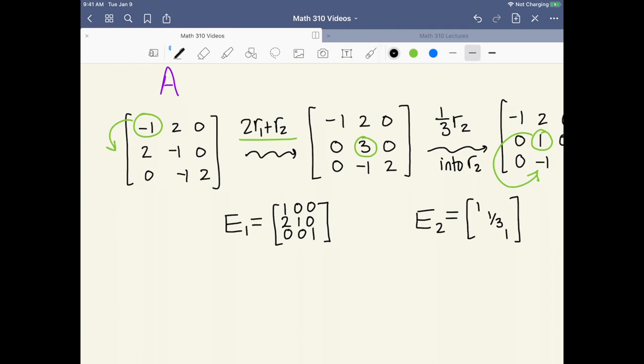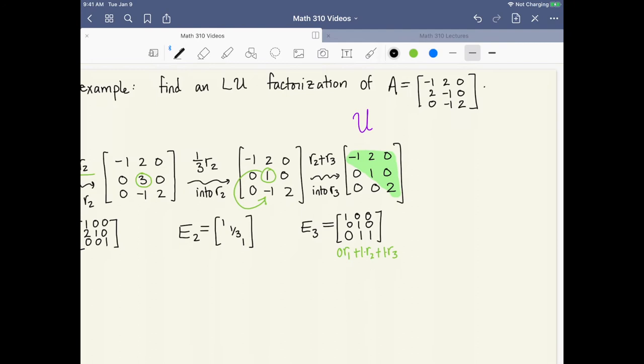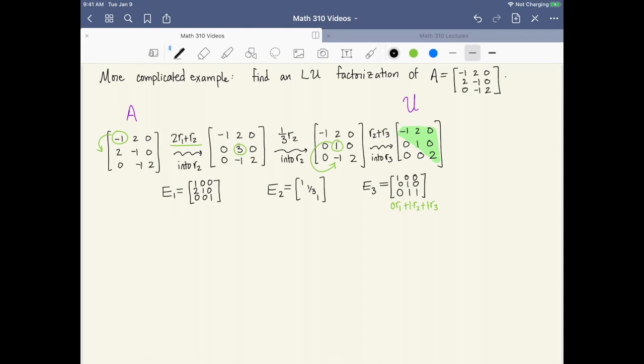And then the third elementary matrix is going to carry out the row operation row 2 plus row 3 into row 3. Because our last row operation was into row 3, this is the row that's going to look most interesting in our elementary matrix. So here we should have [0, 1, 1] indicating the 0 row 1 plus 1 row 2 plus 1 row 3 that's described by the row operation that we did. And the rest of our matrix looks like the identity. Okay, so we have the three elementary matrices that describe the three row operations that put A into upper triangular form.